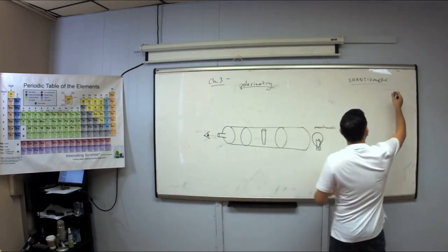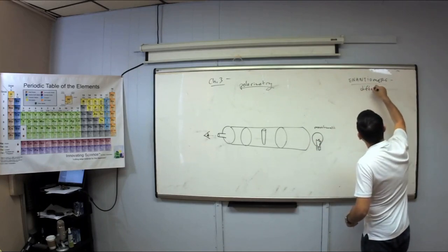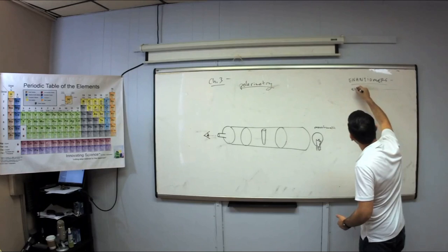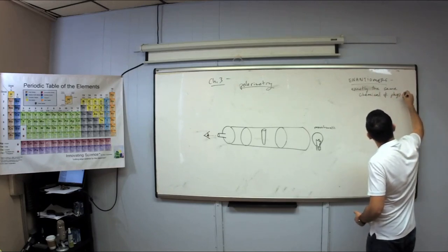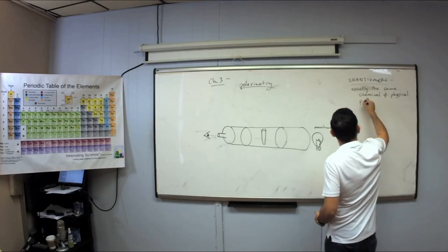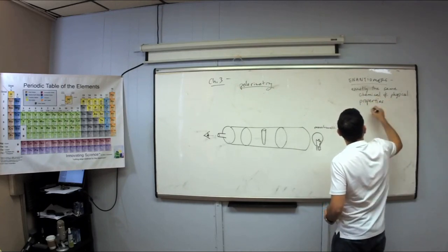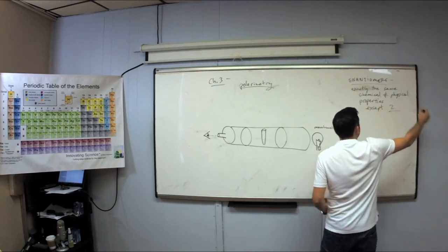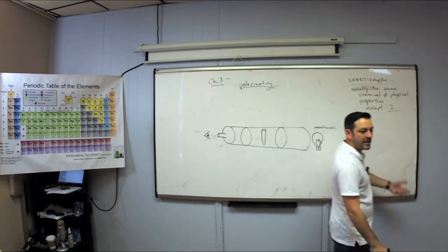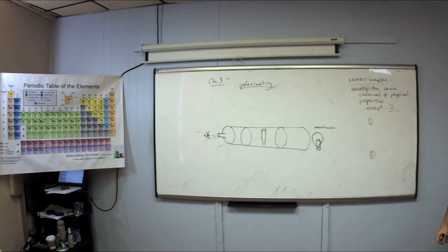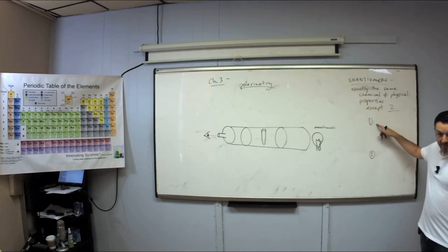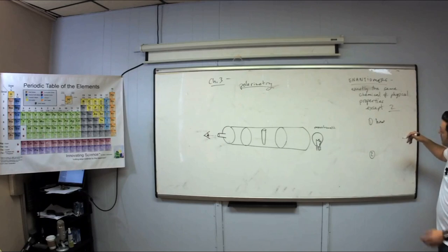There are only two things that make enantiomers different. They have exactly the same chemical and physical properties except two things. And it turns out those two things are one of each — one of them is a chemical property and the other one is a physical property. The chemical property is how the enantiomer would behave.